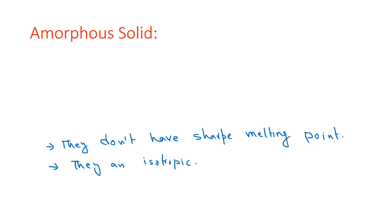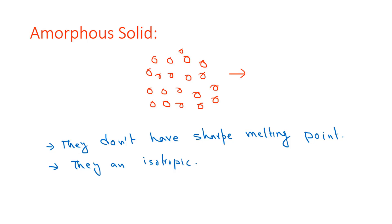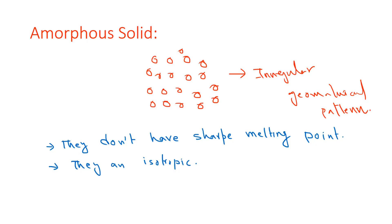Next, what is amorphous? Suppose I am drawing some molecules. If the ordering and the position of the molecules is random, then we can say this is amorphous. It means it has an irregular geometrical pattern. So if the molecules have an irregular arrangement, then we can say this is amorphous.